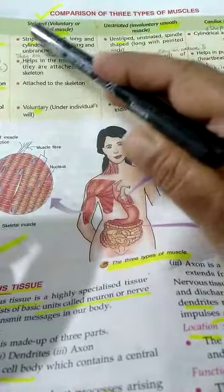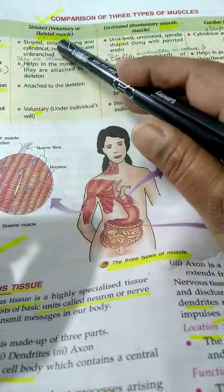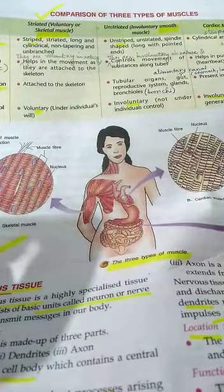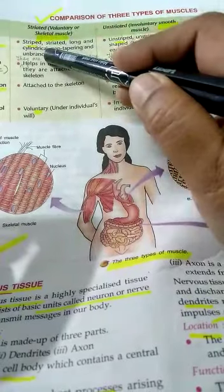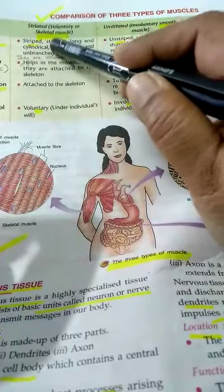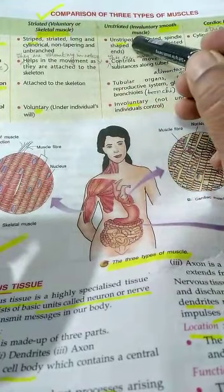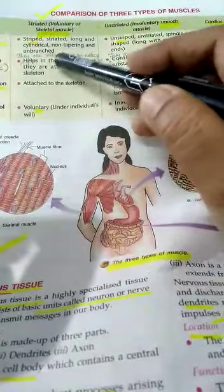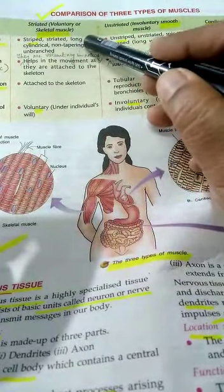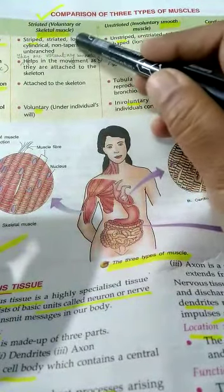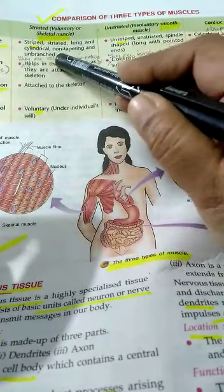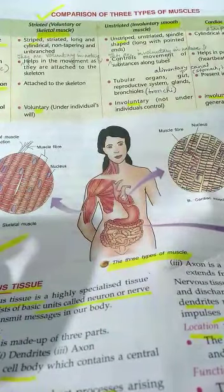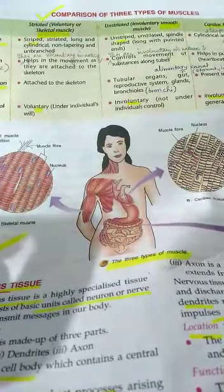Regarding shape: skeletal muscles are long, cylindrical, non-tapering, and unbranched. Smooth muscles are spindle-shaped. Cardiac muscles are cylindrical and branched.